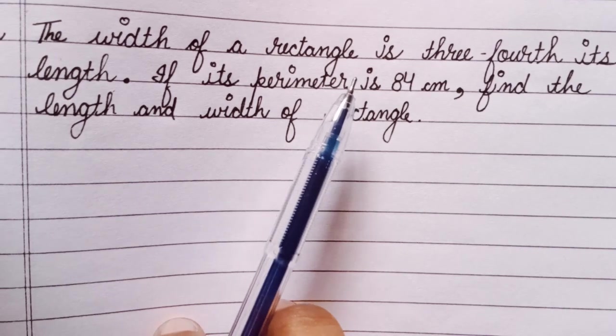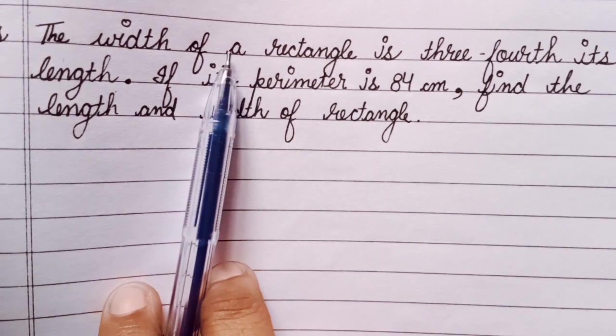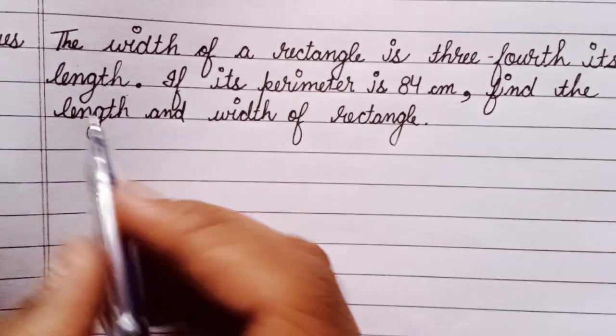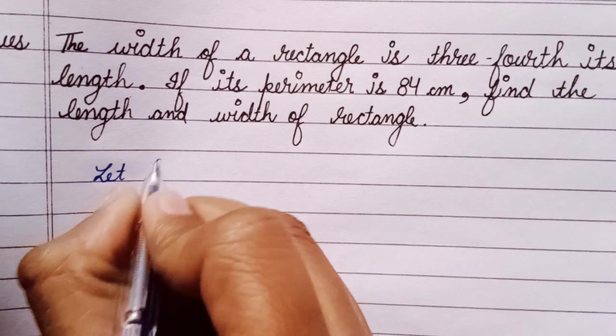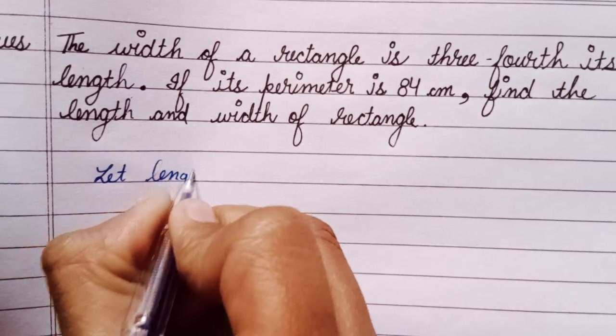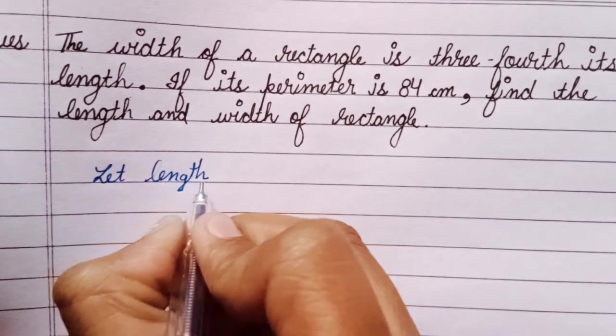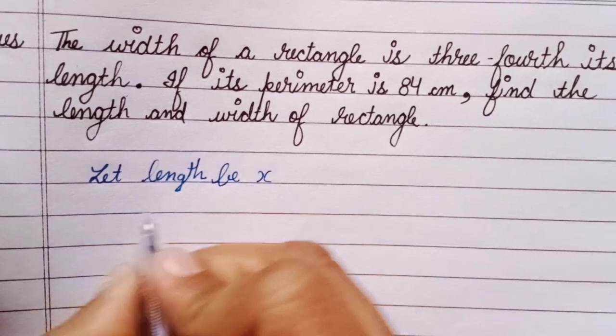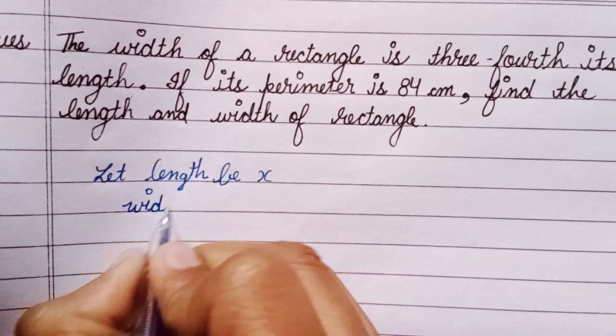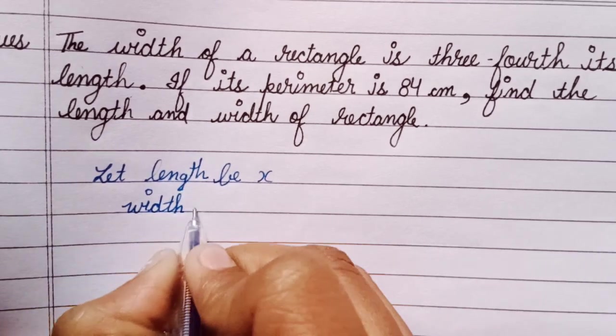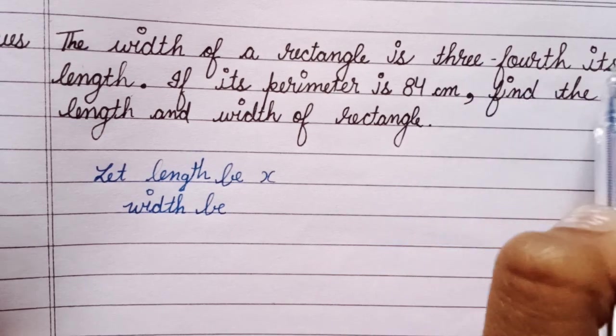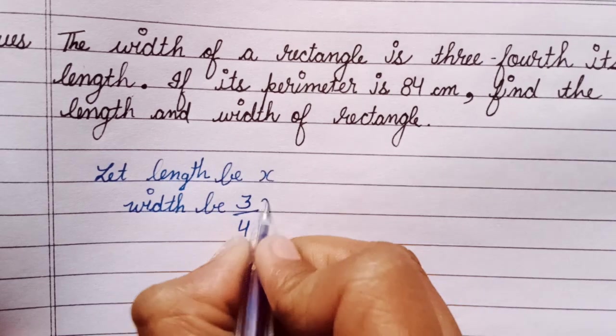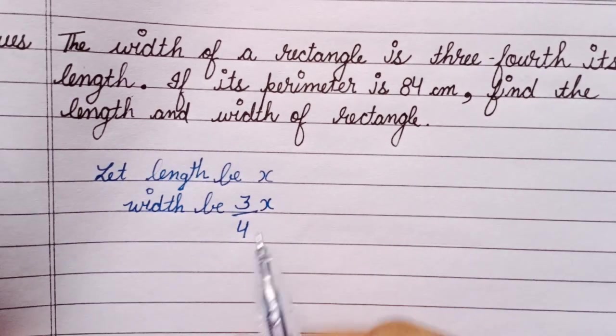The relation of width is given with length, means if we let length be x, then its width will be three-fourths of its length, means 3 upon 4x. This is width of a rectangle according to question.